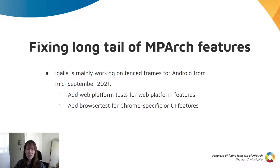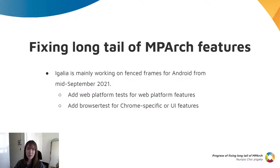Currently, EGALIA is mainly working on fenced frames for Android from mid-September this year. This work contains similar work as the previous pre-rendering work — we are adding web platform tests for web platform features and browser tests for Chrome-specific or UI features.